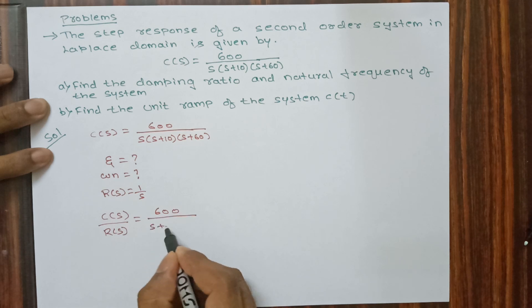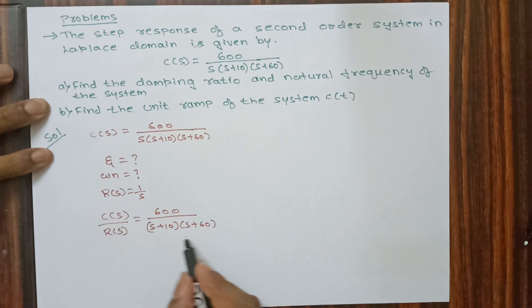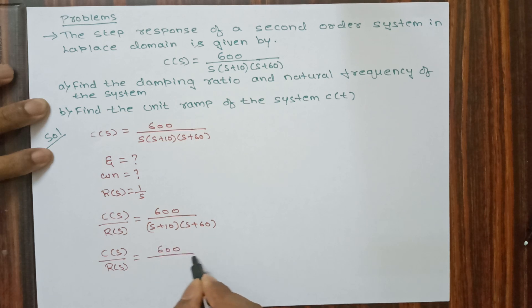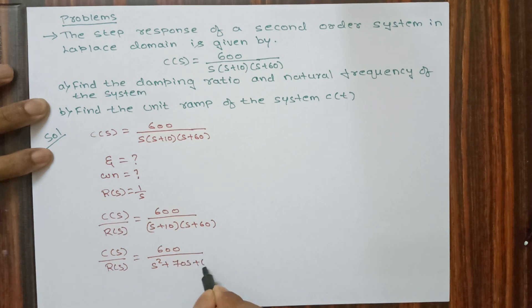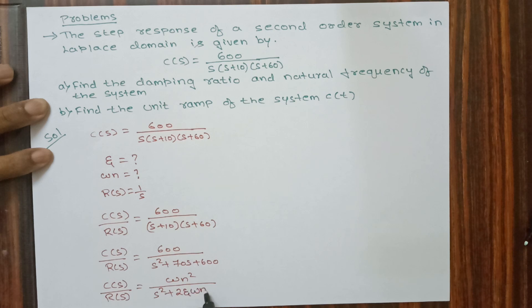By multiplying out the denominator term, we get C(s)/R(s) equal to the standard second order form: omega_n² / (s² + 2ζω_n·s + ω_n²).